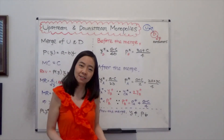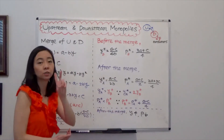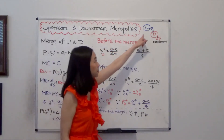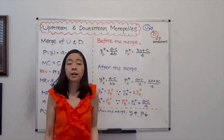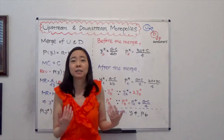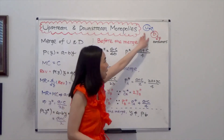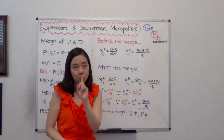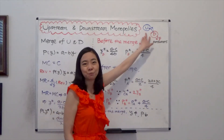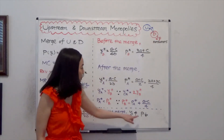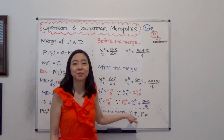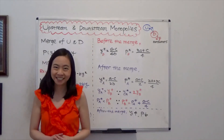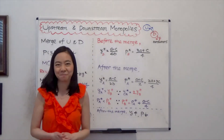You might be asking why is that? Well, before the merger, we had two companies, and each company was a monopoly. Each of them was trying to have a markup to maximize their profit. Now the two companies merge as one, so we only have one markup instead of two. That's the reason why the price goes down and the quantity goes up. So this is the upstream and downstream monopolies — I hope this helps. I'll see you next time.